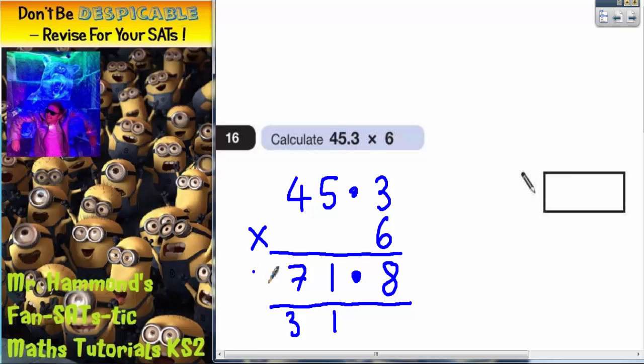You could carry the 2, but as soon as we run out of columns we might want to put the 2 straight in. So the final answer is 271.8. Remember to set it out in columns, remember your decimal point. Don't try and do that in your head.